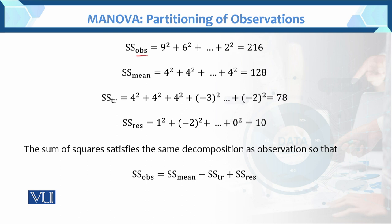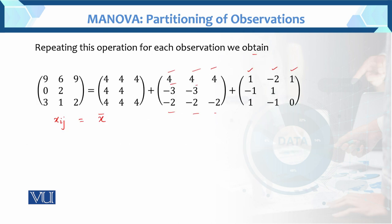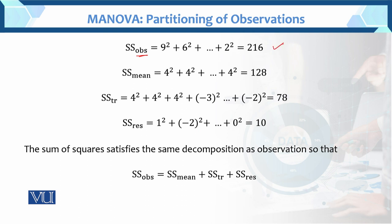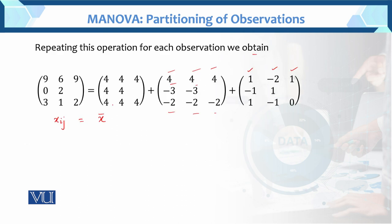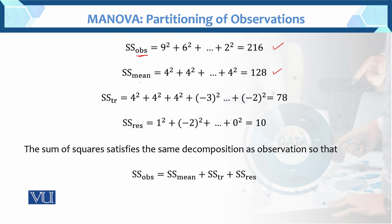Now we compute the sum of squares of the observations. Squaring each xᵢⱼ: 9² + 6² + 9² + 0² + 2² and so on. Total SS observations equals 216. Sum of square of treatment equals 78. Sum of square of residuals (within) equals 10.